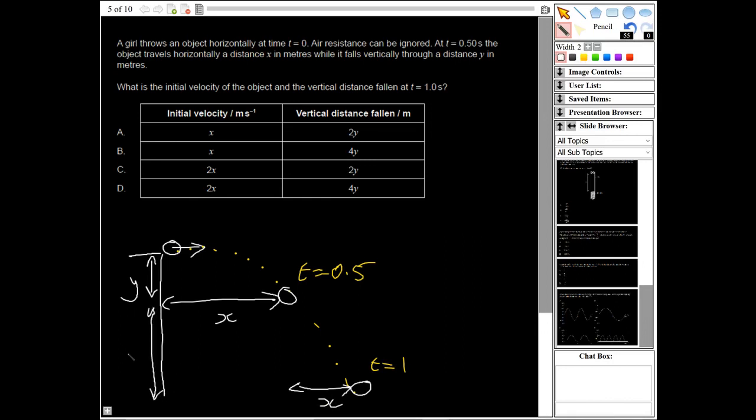Okay, and then this distance here will be more, let's call that z for now. So it should have gone an additional distance x because the horizontal velocity will always be the same. So in one second it would have traveled x and then x again, so in one second it would be 2x. So for our initial velocity in meters per second, it must be 2x, so it can be either C or D.